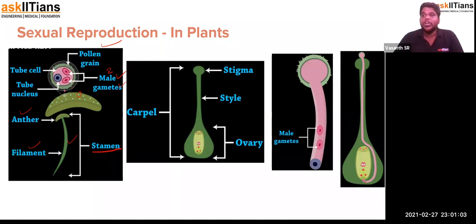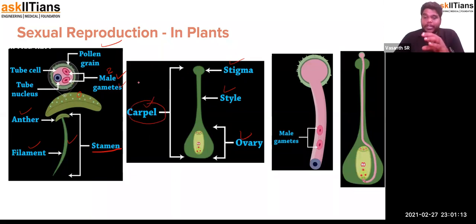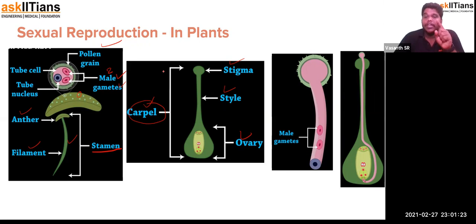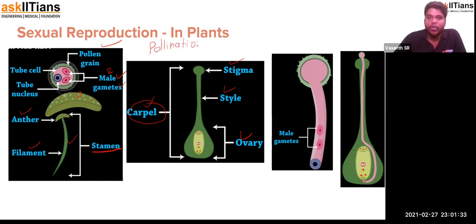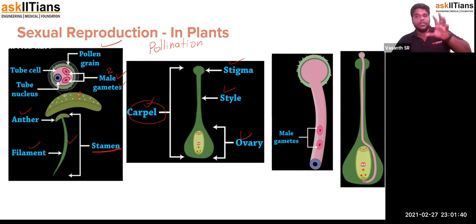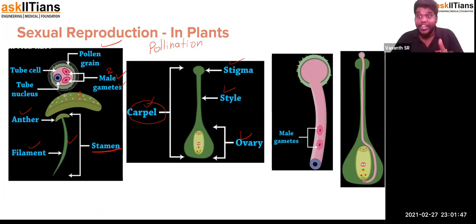When the pollen grain is ready in the male part, the female reproductive part includes stigma, style, and ovary — together called the carpel. With both carpel and stamen in place, the key event for reproduction is pollination. We have studied two different types of pollination: self-pollination and cross-pollination.